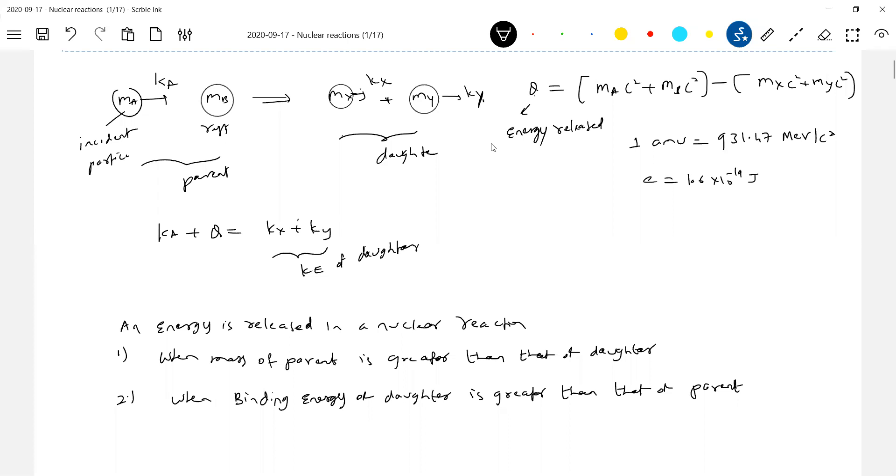So if they give information of binding energy, okay, take help of that one. If binding energy per nucleon, if they have, then from binding energy per nucleon you'll get binding energy. And check the binding energy of daughter - if it is greater than that of the parent, energy will be released. Or mass of parent is greater than that of daughter will be released. Most of their 80% of numericals, masses will be known. In very few circumstances where they give binding energy. In that case, okay, we take help of the second situation. This is the overall generalized conclusion.